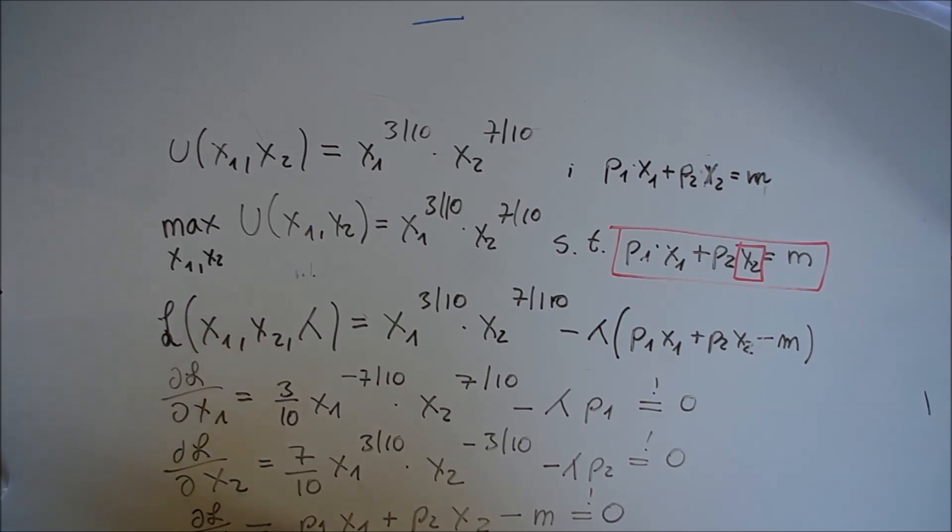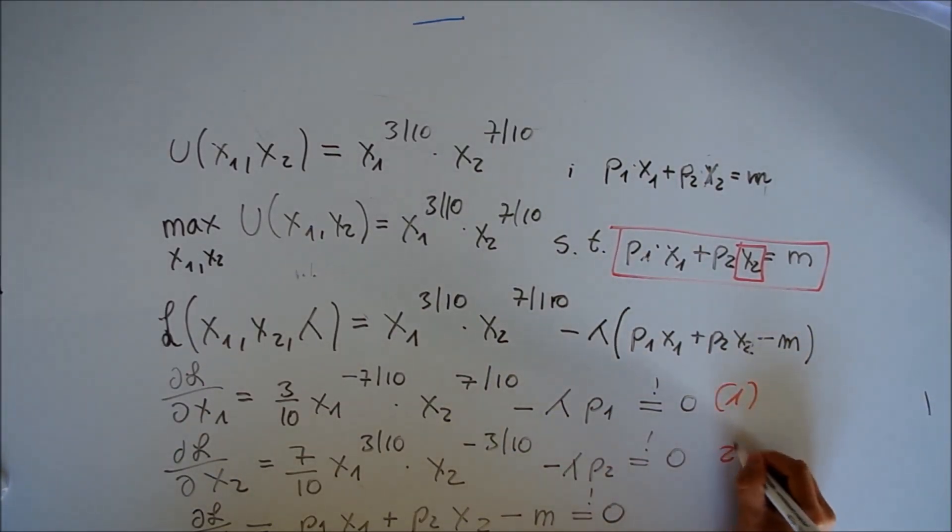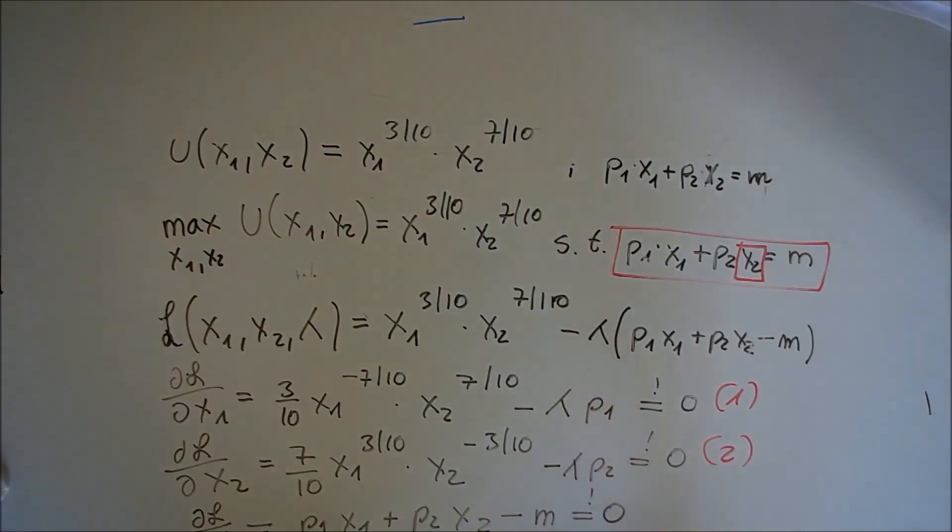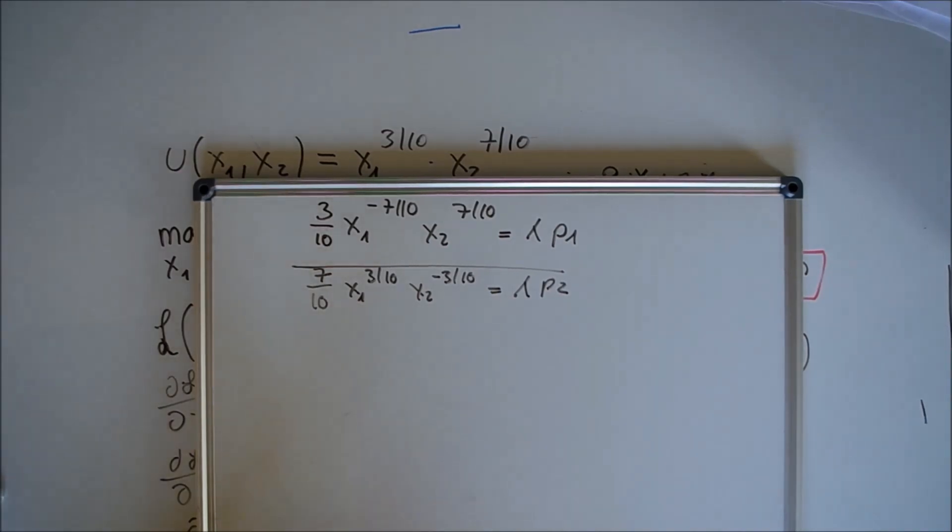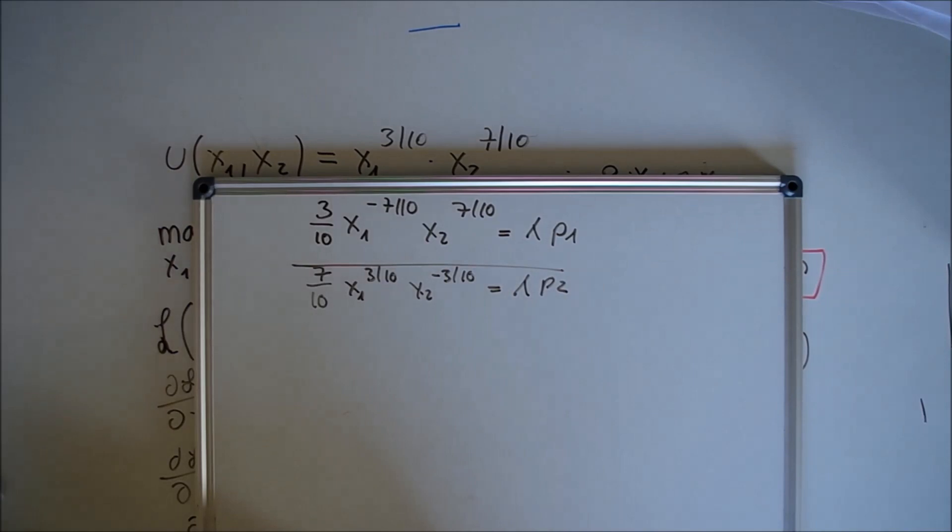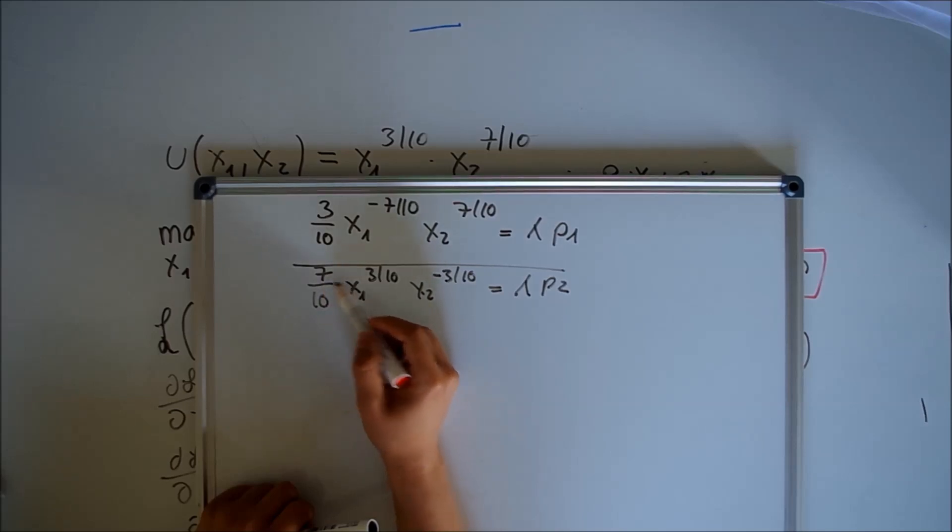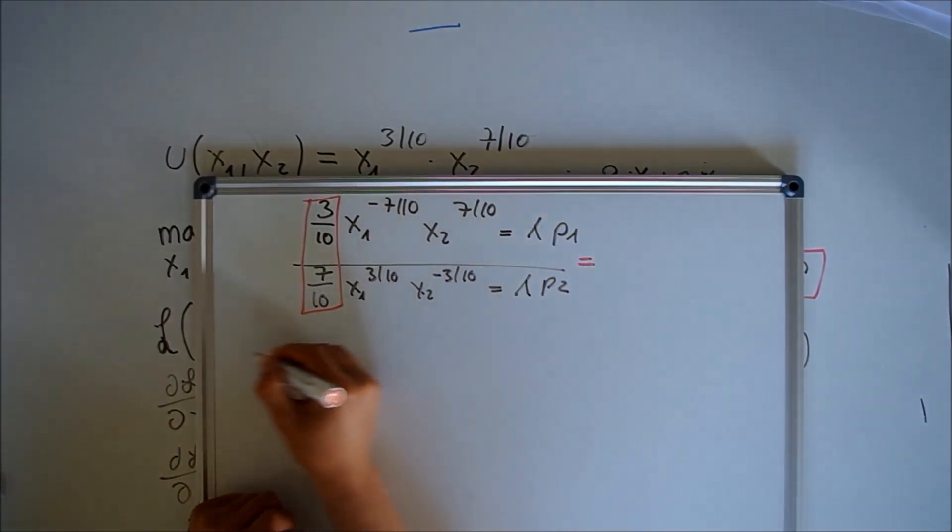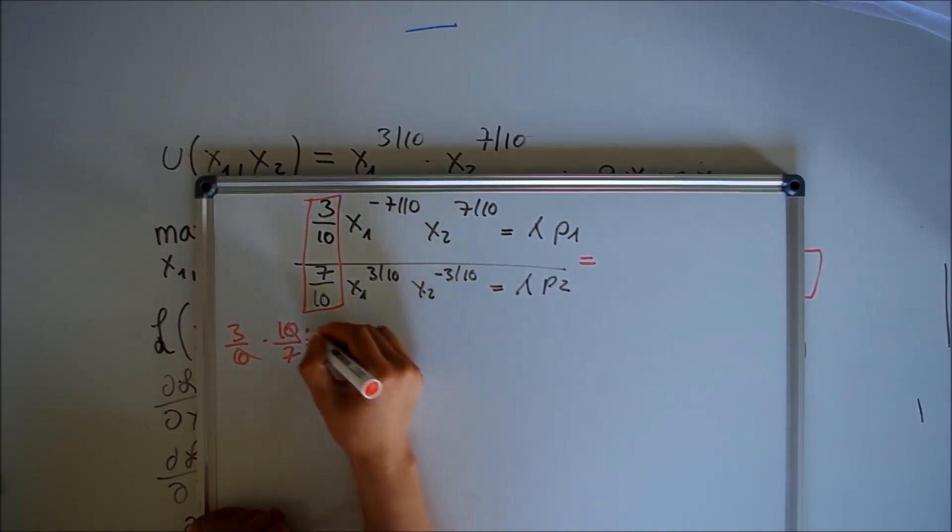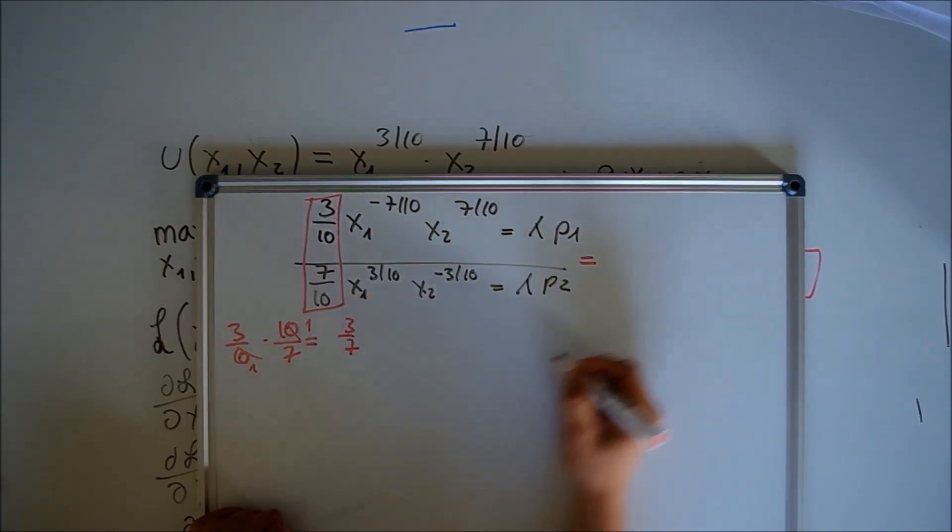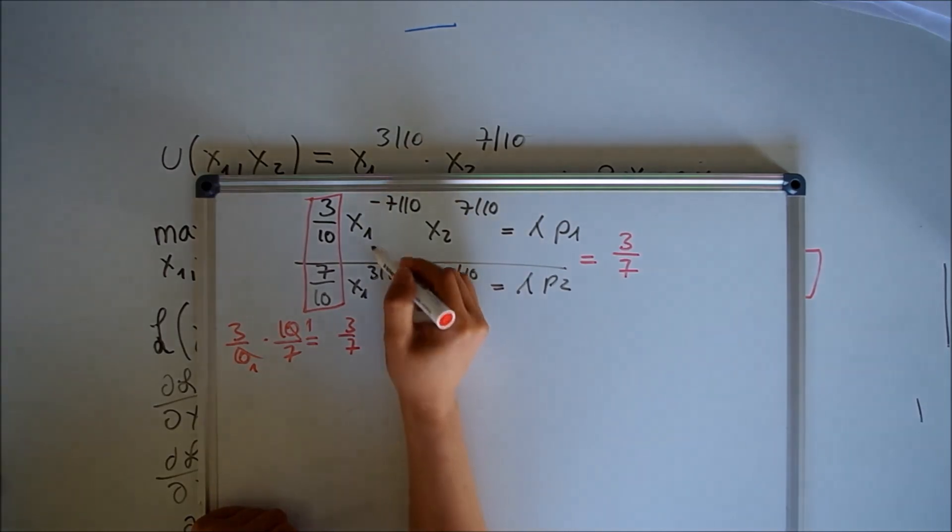Now there are many ways to solve these three equations. My suggestion is to divide equation 1 by equation 2, which leads to a large fraction. At first it doesn't look easy to solve, but it's actually pretty easy. We see two fractions, which can be solved as (3/10) * (10/7) = 3/7.